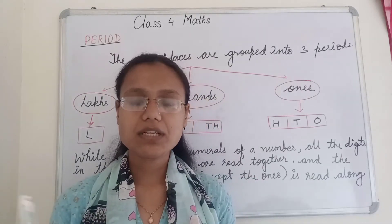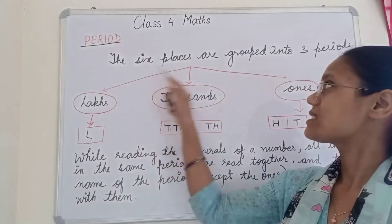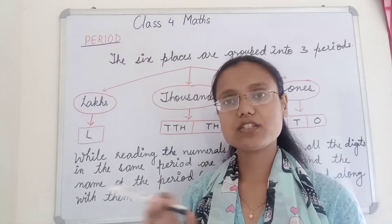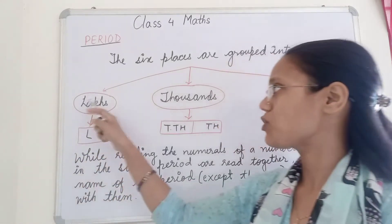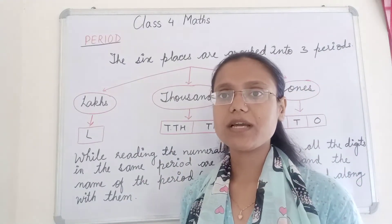Let us see how many periods are there in a six digit number. The six places are there in a six digit number. That is ones, tens, hundred, thousand, ten thousand and lakh. These six places we call them places and the number is place value.